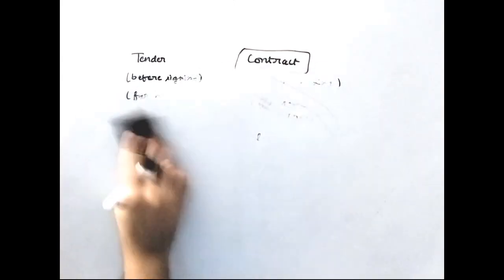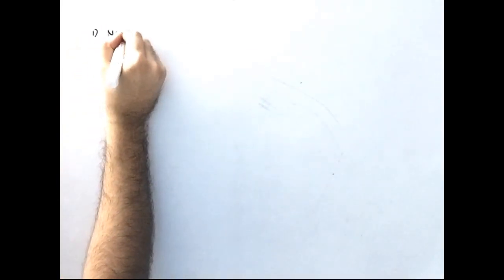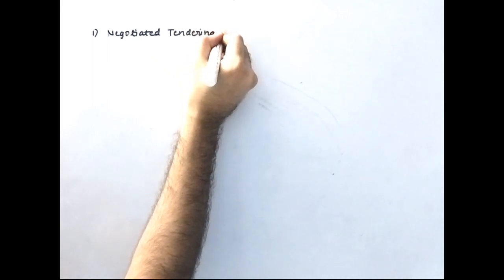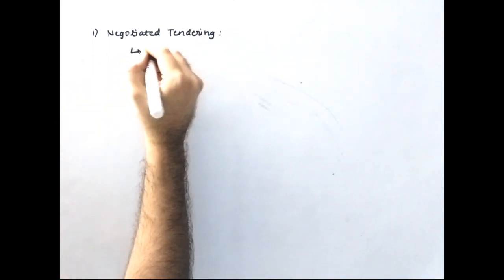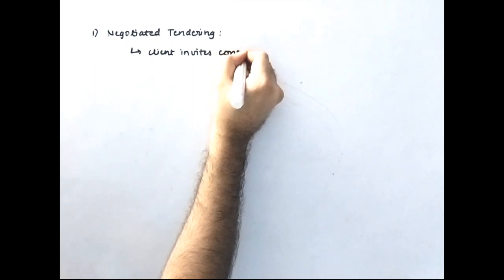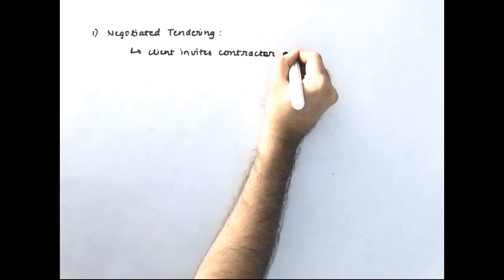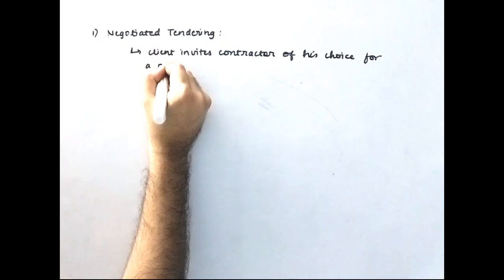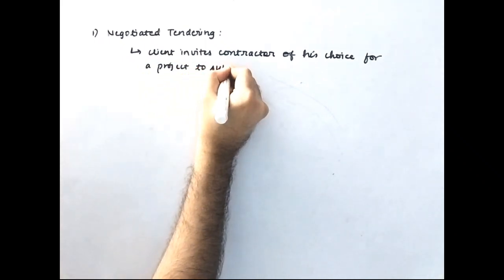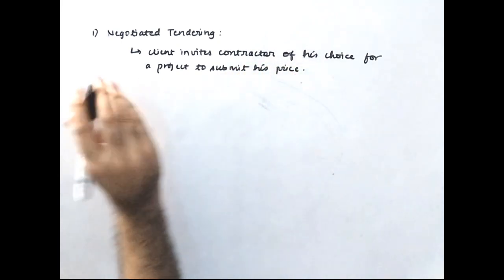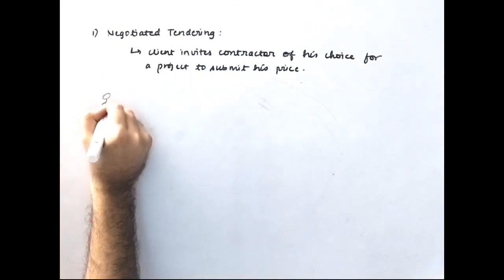Now we will move to what are the various types of tenders. The very first type is negotiated tendering. In negotiated tendering, the client invites the contractor of his choice for a project to submit his price.